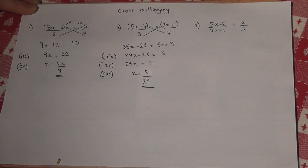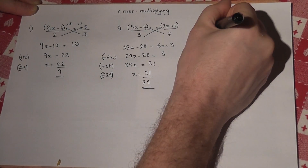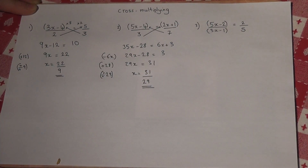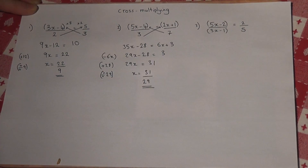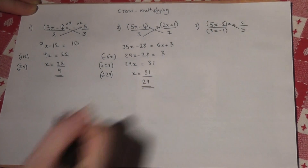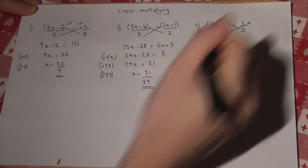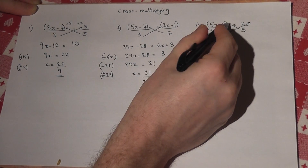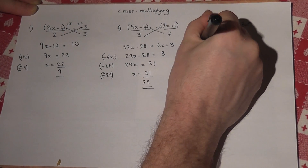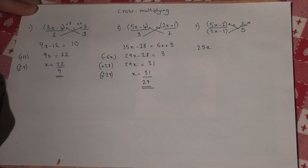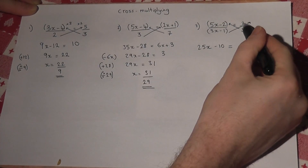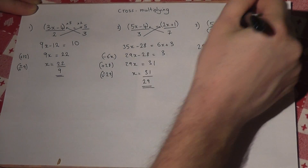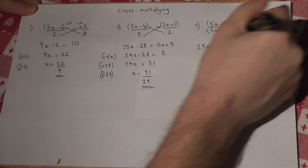This technique still works even with more complex-looking equations. I'll place the brackets around the multiple terms first — the rule still applies. I times the opposite numerator by the other denominator, so I times up by 5 and up by that entire bracket. So it's 5 lots of this bracket: 25x — 5 times 5x — and 5 times minus 2 is minus 10. And that equals 2 lots of this entire bracket: 2 times 3x is 6x, and 2 times minus 1 is minus 2.